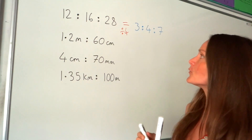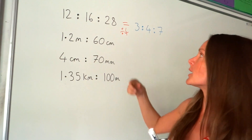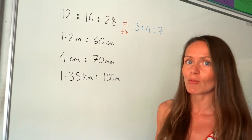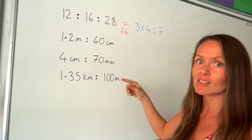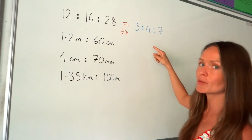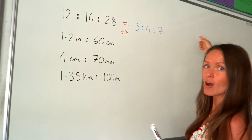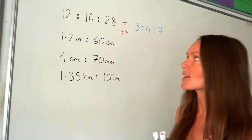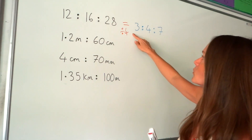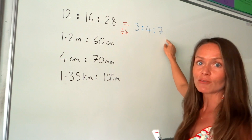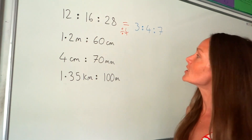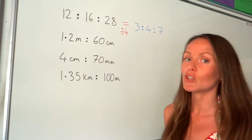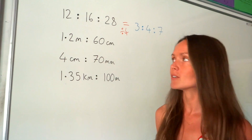If you divide by 2, which is not the highest common factor, that's fine — it just means you would have to divide by 2 again afterwards, and you keep simplifying until you get your simplified version. On to the next one — this time the units are different.